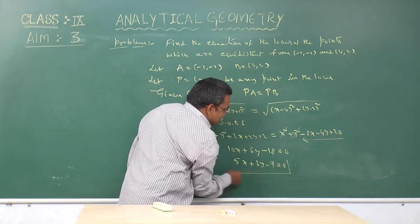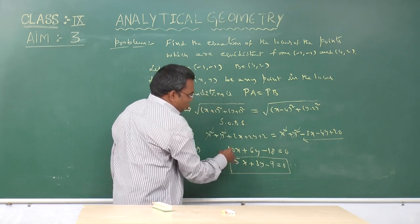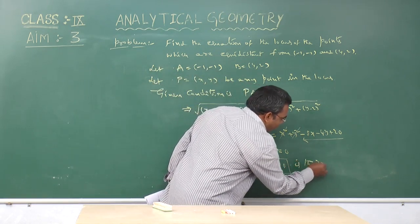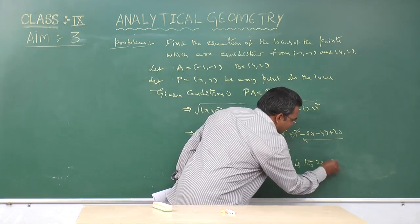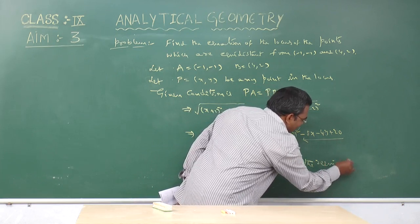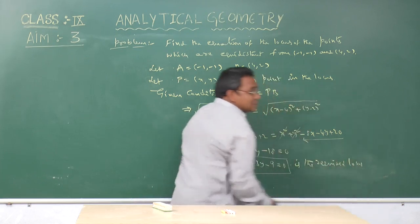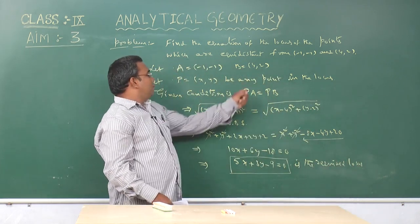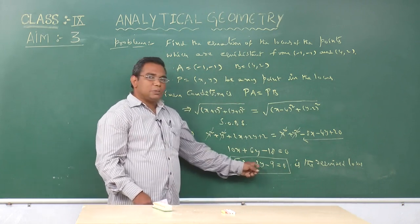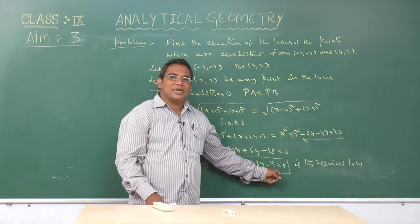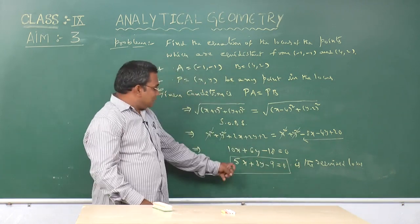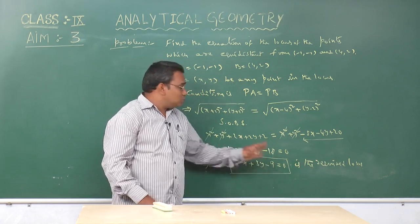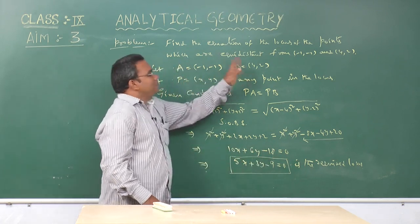This is the required locus. Hence, the locus of P is 5x + 3y - 9 = 0. This represents a straight line which is perpendicular bisector of AB.